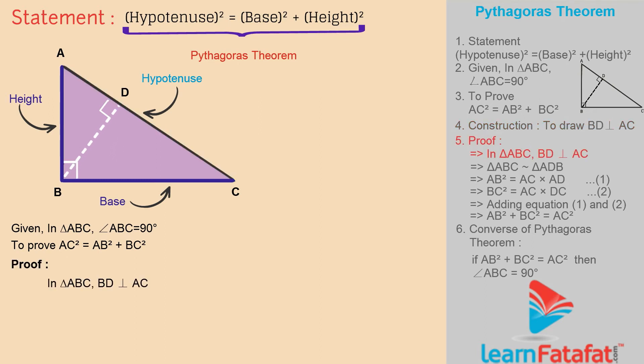Proof: In triangle ABC, BD is perpendicular to AC. By construction, triangle ABC is similar to triangle ADB by similarity in right-angled triangle property.